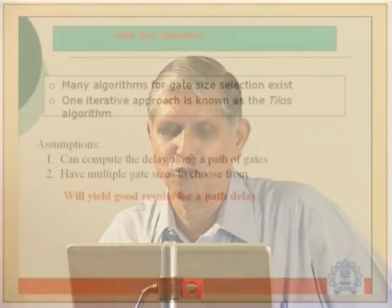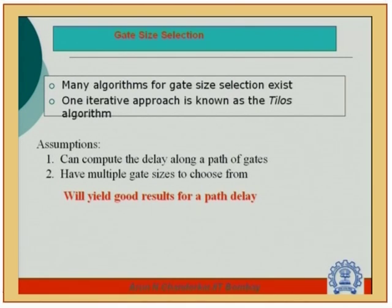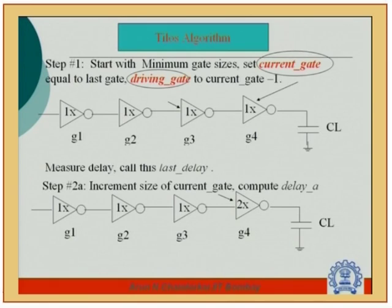Many algorithms for gate size selection exist. A famous iterative approach in the literature is Tillo's algorithm. It assumes we can compute delay along a path of gates with multiple gate sizes available to choose from, yielding good results for path delay. Tillo's theorem forms the basis of logical effort. The algorithm starts with, say, four inverters all at 1x size driving a load capacitance C_L, measuring the delay from input to output — the 'last delay.'